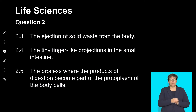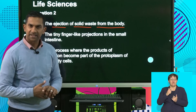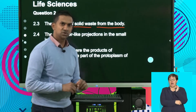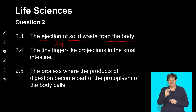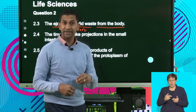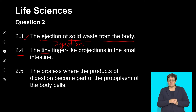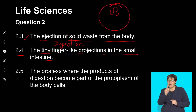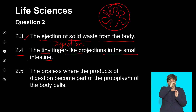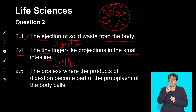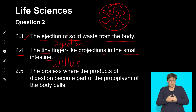2.3: The ejection of solid waste from the body. That's the last process when we talk about nutrition — the ejection refers to egestion, which is the removal of parts not required at the end of digestion. 2.4: The tiny finger-like projections in the small intestine. If we look at the lumen of the small intestine, we see these transverse folds — those finger-like projections that extend into the lumen are called the villus, structures that increase the surface area of the small intestine.